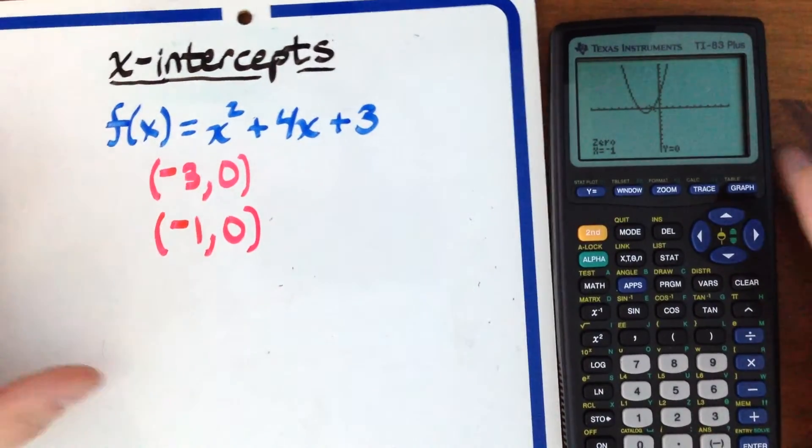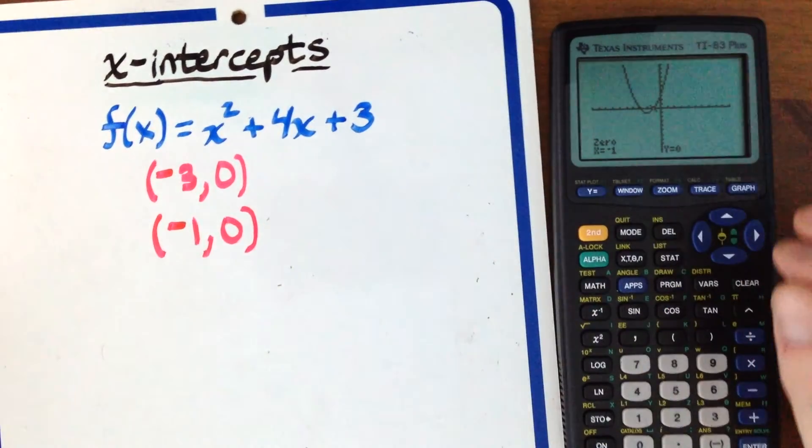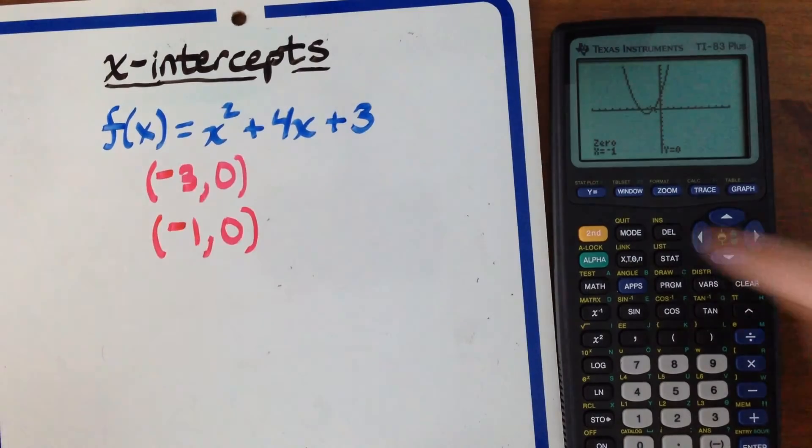Now we have both x-intercepts. That's how to use the graphing calculator to find x-intercepts of a function. If you have any questions, let me know.